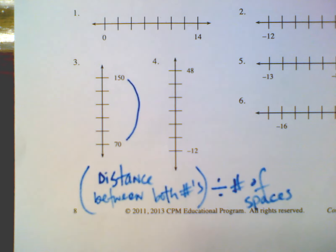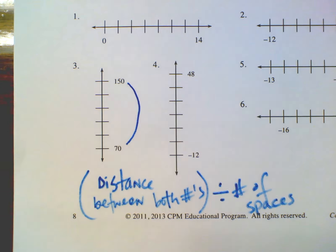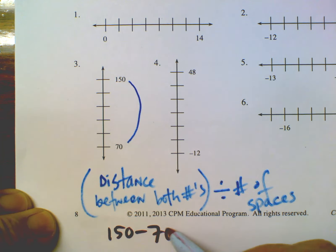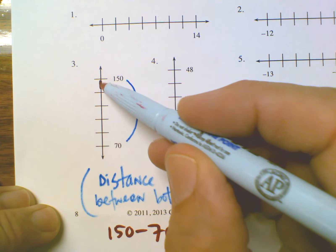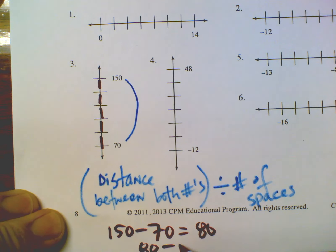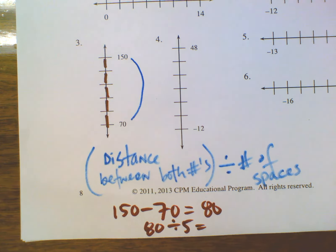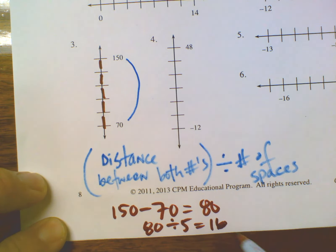How do you find the distance? Just subtract. In this case, 150 minus 70 is 80. Then I look at how many spaces I've got: one, two, three, four, five spaces. So I take 80 and divide by five. 80 divided by five is 16. So the spaces in between are going to be 16 apart.